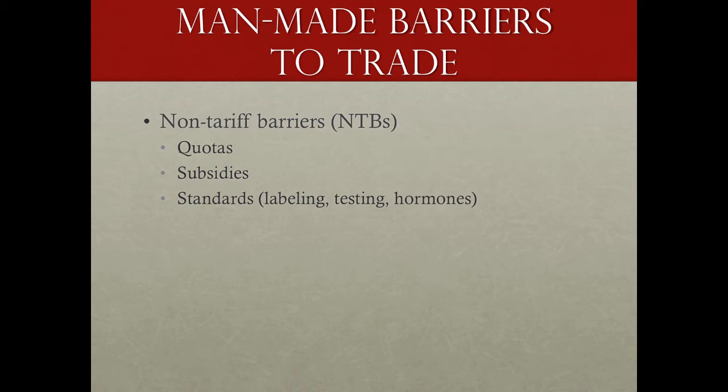Another form of non-tariff barrier is standards — labeling requirements, testing requirements. An example is in Europe, where the use of hormones in the production of meat is not allowed, which eliminates much of the beef and poultry production in the United States that does use hormones. A case could be made that this is on the basis of health concerns, though many in the U.S. argue there is no demonstrated health consequence. There are other requirements made particularly stringent just to serve as a veiled barrier to trade.